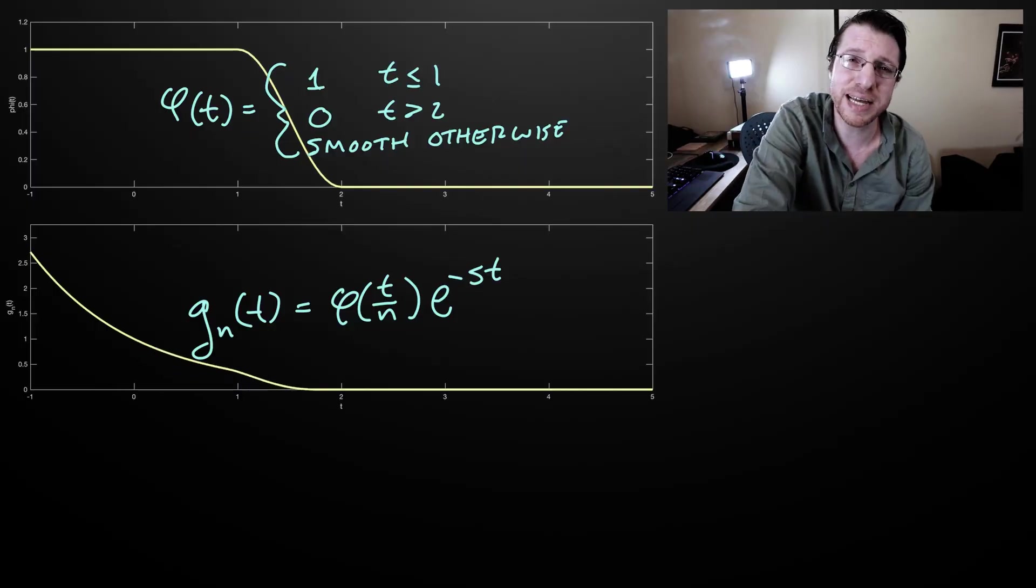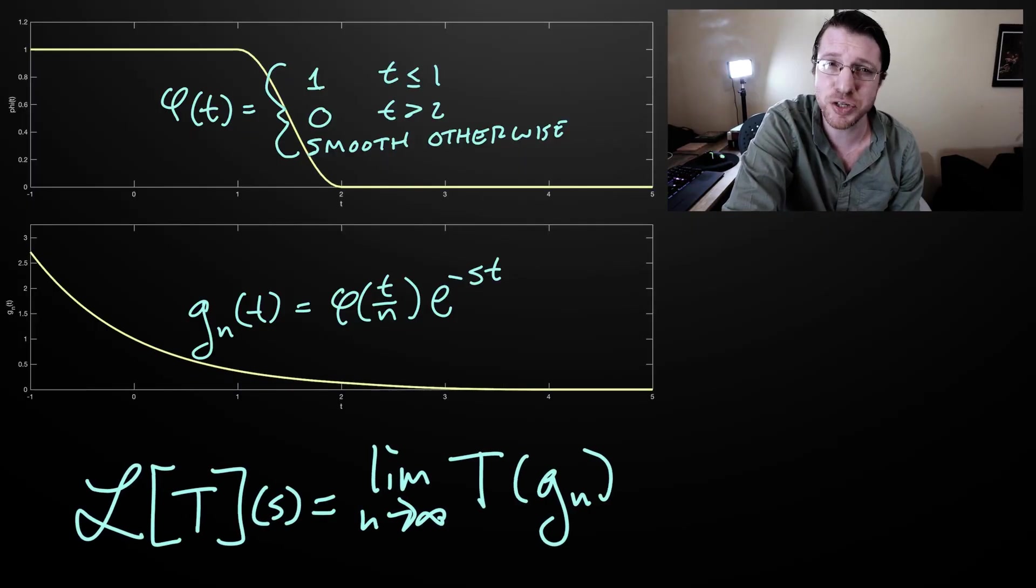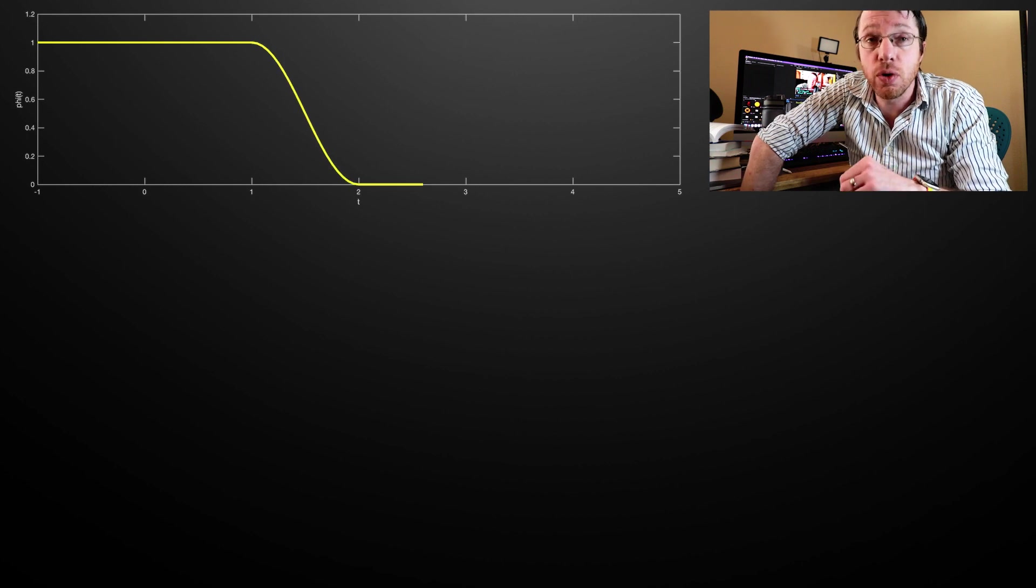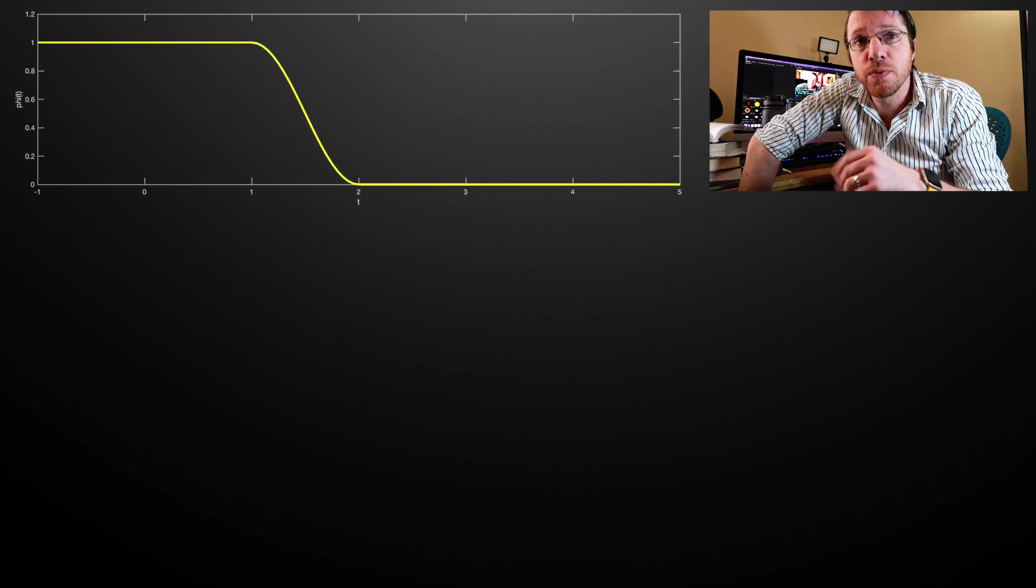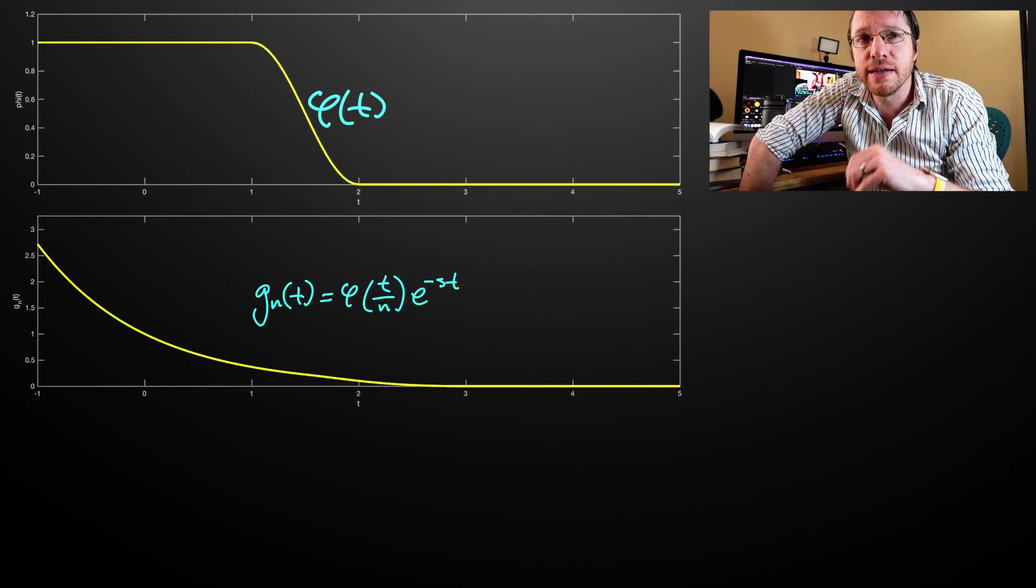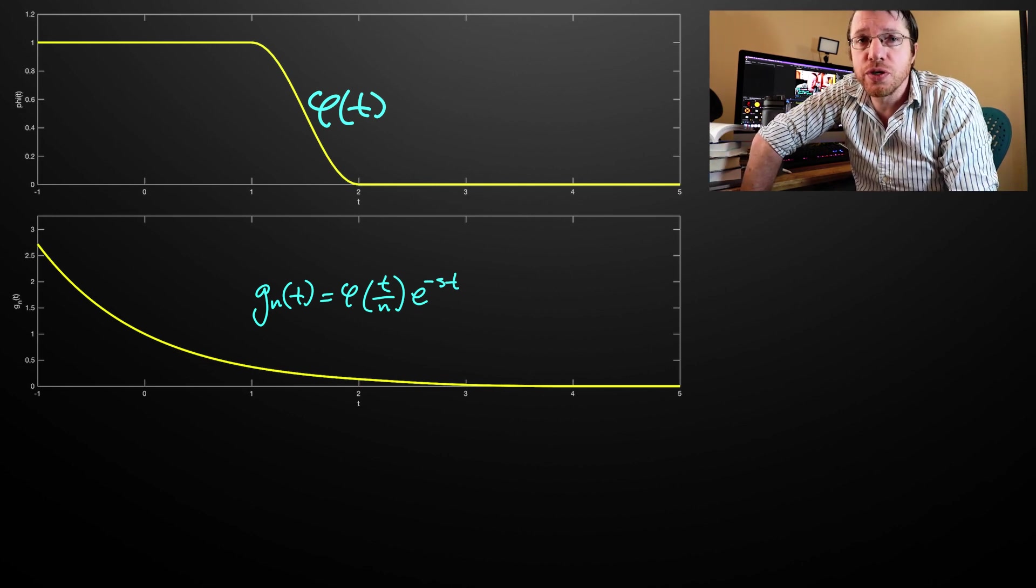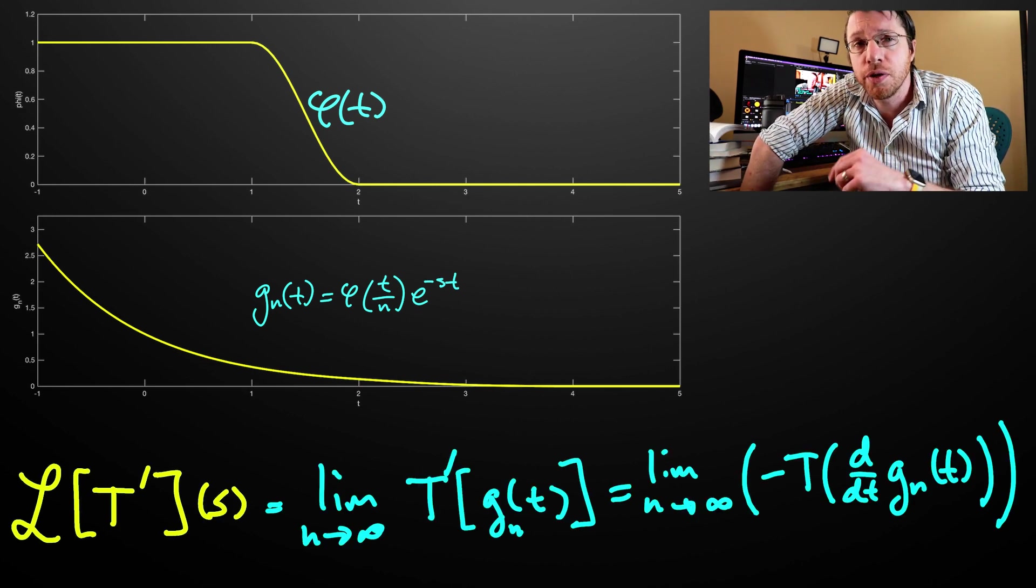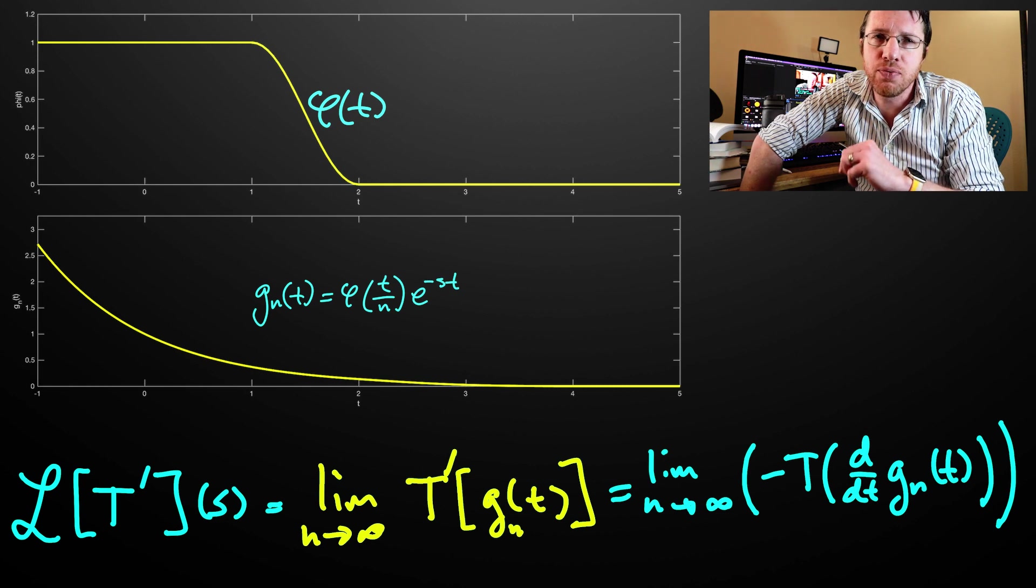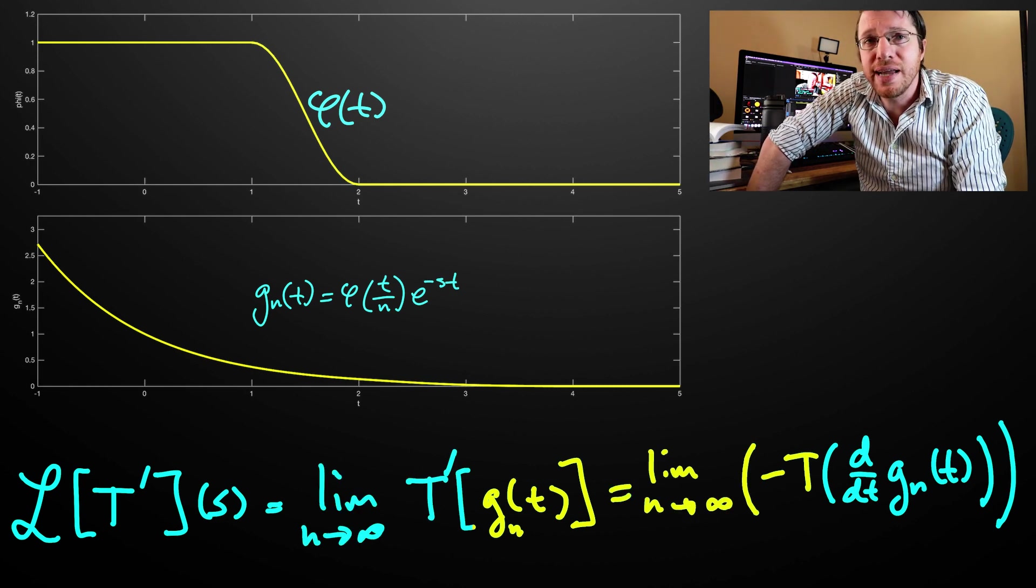Now we can talk about the Laplace transform of derivatives of distributions. Recall that we define the Laplace transform of a distribution at a point s as the limit of its action on a sequence of functions converging to e to the minus st, in some sense. Specifically, we take a function that is 1 from negative infinity to 1 and 0 from 2 to infinity. And we want this to be smooth between 1 and 2. And we create the sequence as g_n of t is equal to phi of t over n times e to the minus st. Thus, for a distribution t supported on some half line, the Laplace transform of the derivative of t at s is given as the limit n goes to infinity of t prime of g_n, which is by definition minus t of g_n prime.